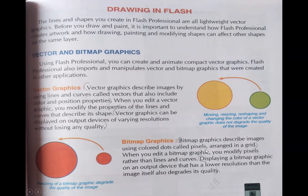Bitmap graphics describe images using colored dots called pixels arranged in a grid. When you make bitmap graphics, the images are always made by dots — lines are represented by curves and dots made by pixels, arranged in rows and columns in a grid form. If we want to modify bitmap graphics, we have to change the pixels and their properties. When we display bitmap graphics on an output device, the resolution is degraded — that means the picture quality is degraded.